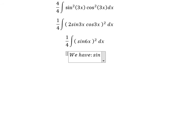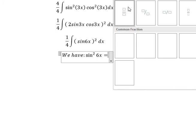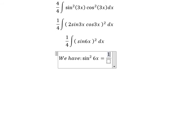We have sin²(6x) = (1 - cos 12x)/2. This is the formula of this one.